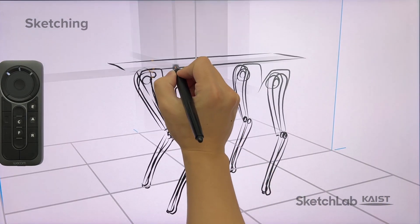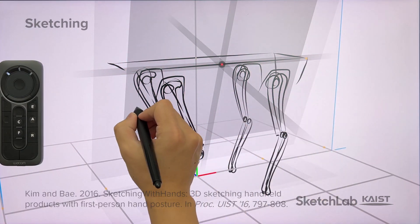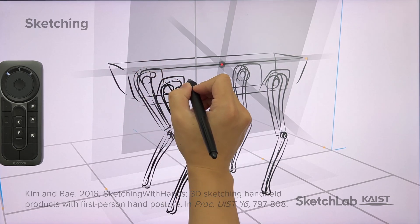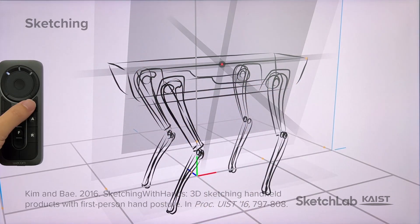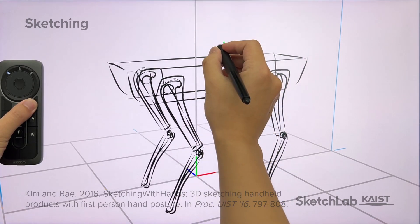After creating a sketch plane widget and moving it to a desired position and orientation, the designer can sketch 2D curves that are projected onto the 3D sketch plane widget. While holding down the erase button with the left hand, with the right hand, the designer can erase a sketch curve or erase the sketch plane widget.